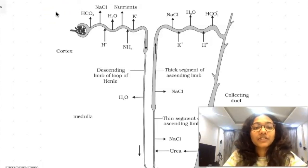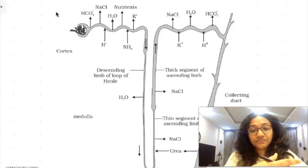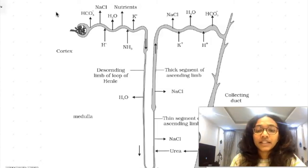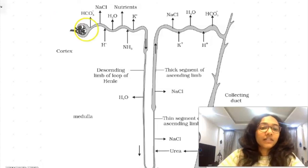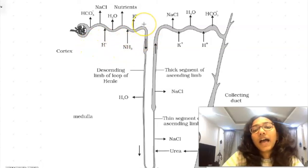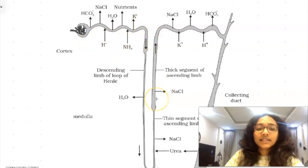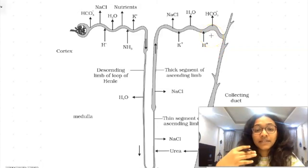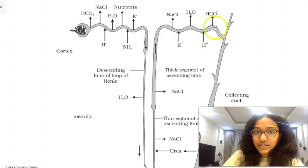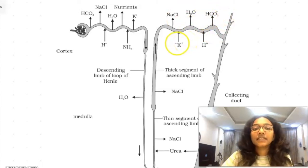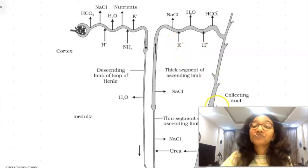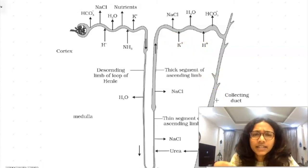This is just the reabsorption part. There is also the secretion part. Certain ions such as H+, NH3, and K+ - that is potassium, hydrogen, and ammonia - are selectively secreted into the urine so that the osmolarity or ionic balance of the entire kidney and medullary pyramids interstitium is maintained. In PCT there is reabsorption of hydrogen ions, ammonia, and potassium ions. Similarly there is reabsorption in the DCT too of potassium and hydrogen ions, and DCT also selectively reabsorbs bicarbonate ions.